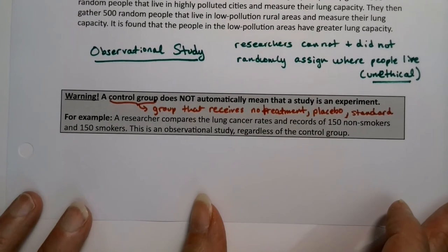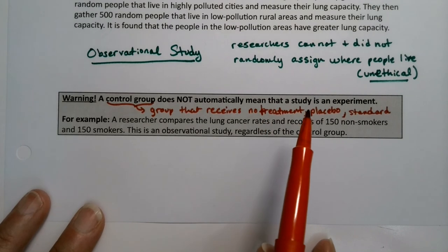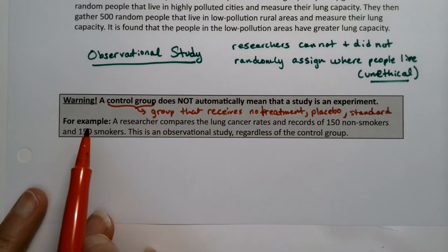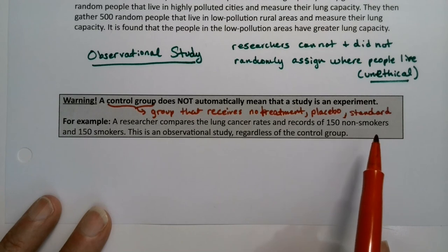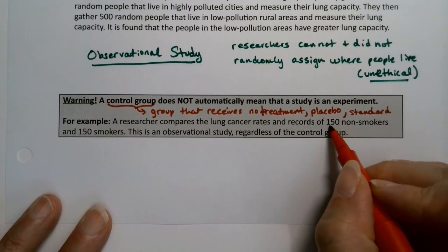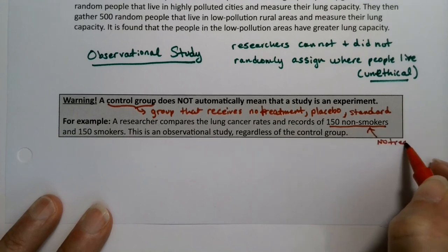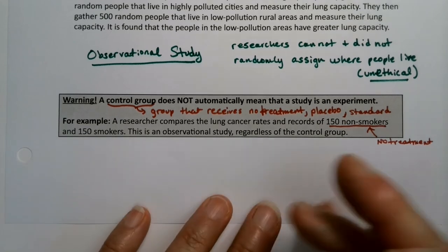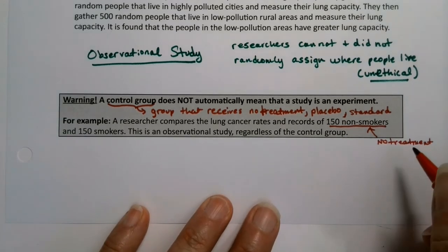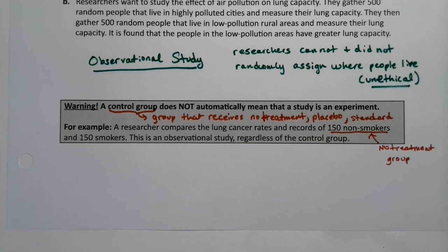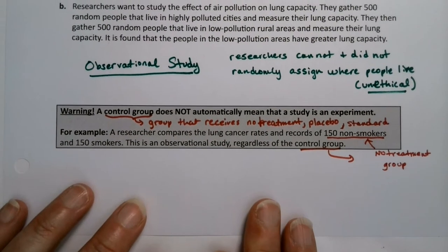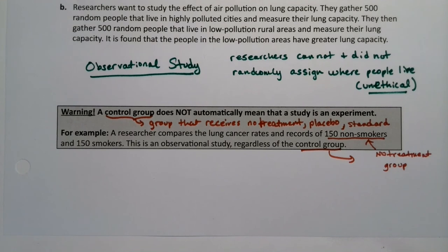That control group does not necessarily mean that your study is an experiment. For example, if a researcher compares the lung cancer rates of 150 non-smokers and 150 smokers — that non-smoker group is not really a control group in the scientific definition. Science-wise, control groups can only exist in experiments. Observational studies have no-treatment groups, but the existence of that no-treatment group does not make it an experiment. It's still an observational study, because it would be unethical to force them to smoke or not smoke.